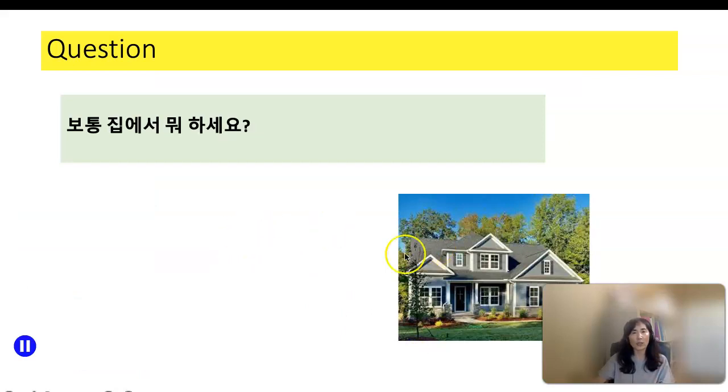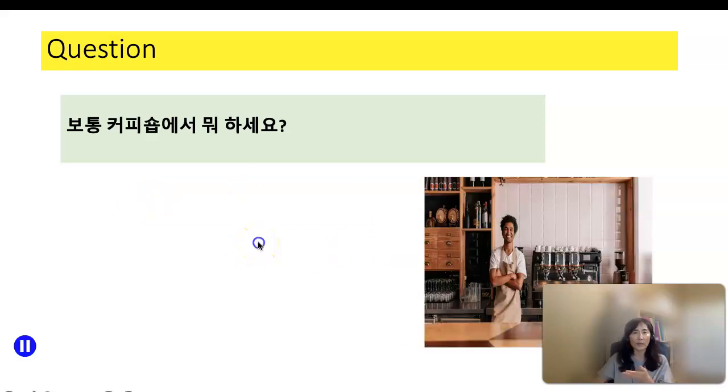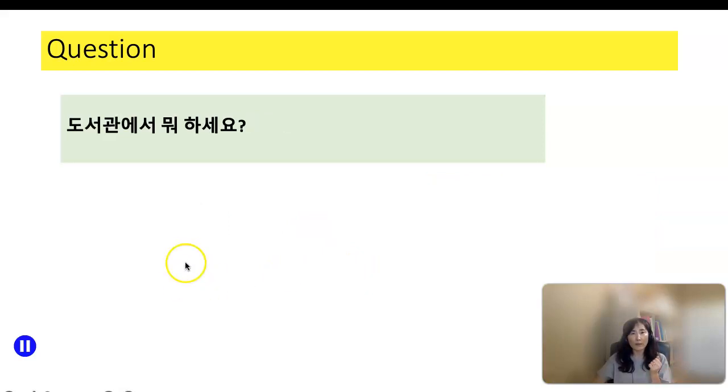Now I'm just going to ask some questions to you, and please answer. 보통 집에서 뭐 하세요? Usually, what do you do at home? 집에서 자요? 집에서 먹어요? 집에서 공부해요? Maybe those kinds of answers would be appropriate. 보통 커피숍에서 뭐 하세요? Usually, what do you do at a coffee shop? 커피숍에서 커피를 마셔요. 점심을 먹어요. 친구를 만나요. 공부를 해요. 도서관에서 뭐 하세요? 도서관에서 공부해요. 책을 읽어요. 친구를 만나요. 숙제를 해요. 공원에서 뭐 하세요? 공원에서 I walk, 걸어요. 공원에서 커피를 마셔요. 공원에서 exercise, 운동을 해요.